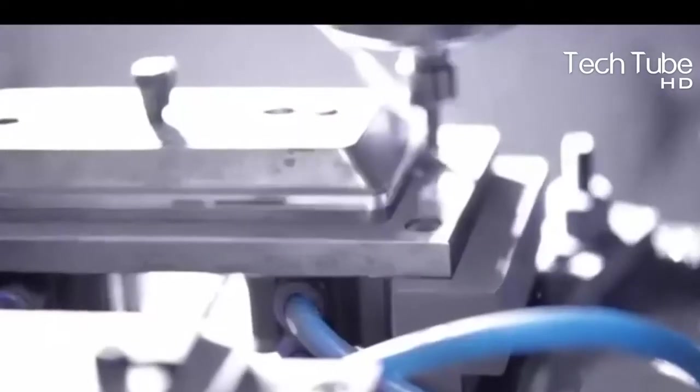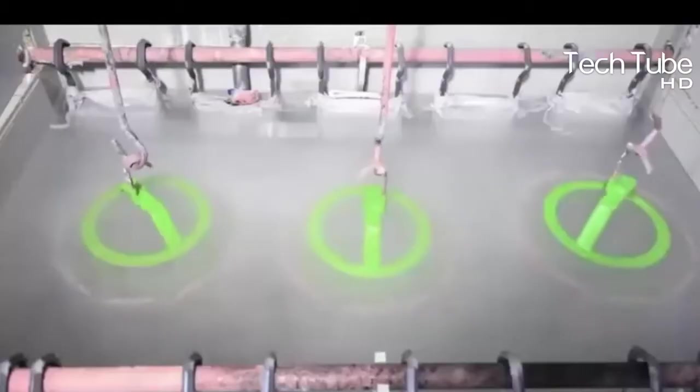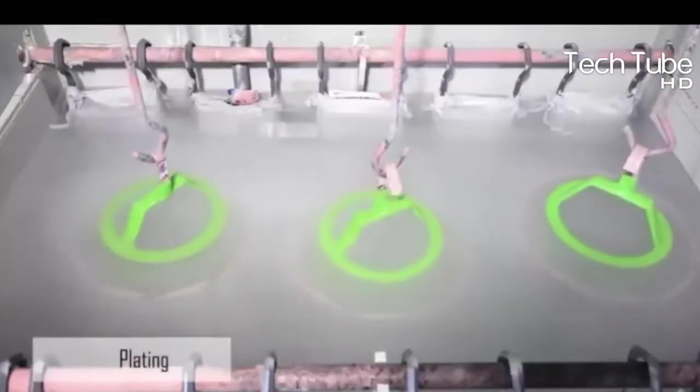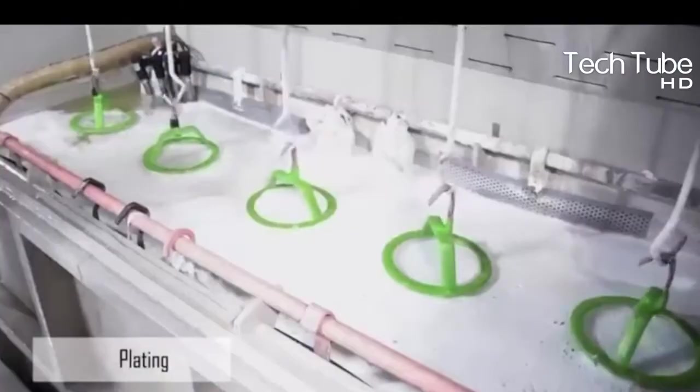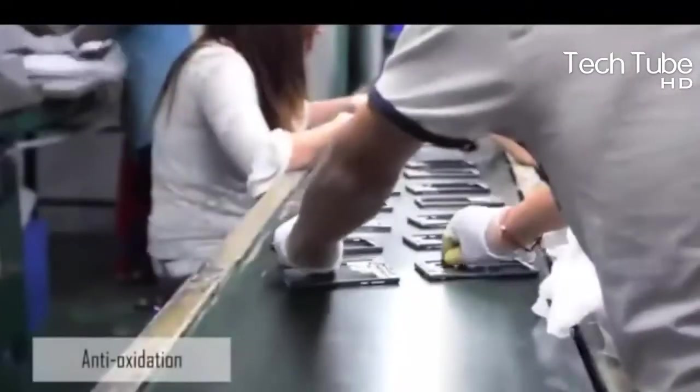After finalizing the prototype, manufacturing of the body and screen on large scale starts. Routinely, aluminum is used as the outer covering of the phone. Aluminum is compressed and the edges are trimmed according to the size of the phone. After that, the drill machine removes the extra parts to make the required space for the charging system, USB, or cameras.